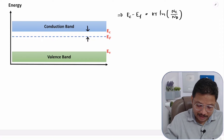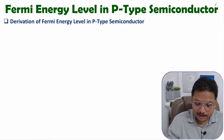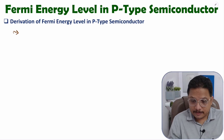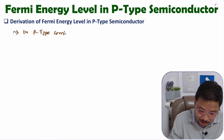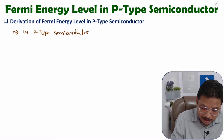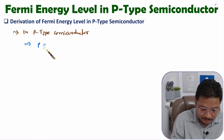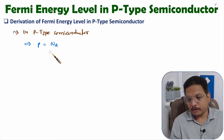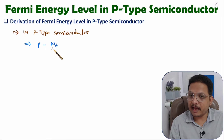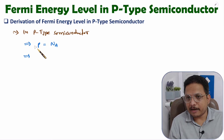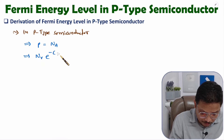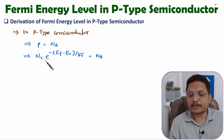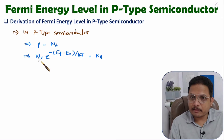The same thing can be calculated for P-type semiconductor material. In P-type, we add trivalent impurities, which means we are adding acceptor impurities. The concentration of holes in the valence band equals the acceptor impurity concentration Na. That concentration of holes, which we have already derived, is: Nv into e to the power minus of (Ef minus Ev) divided by KT, equals Na, where Nv is the material constant.